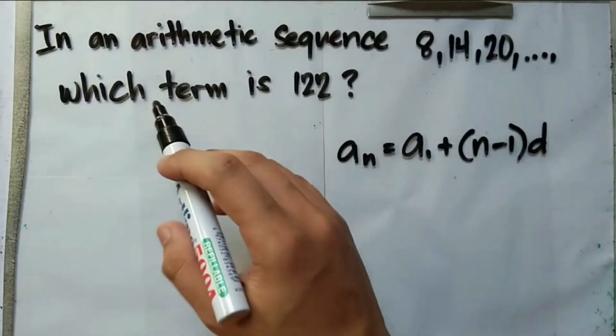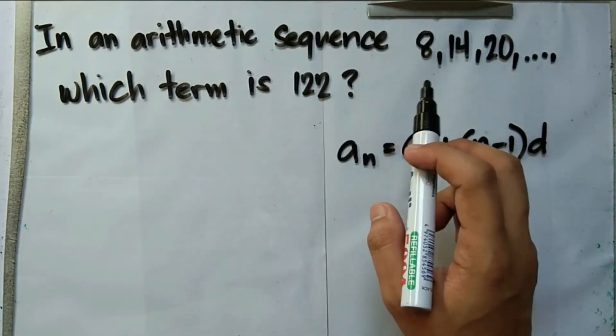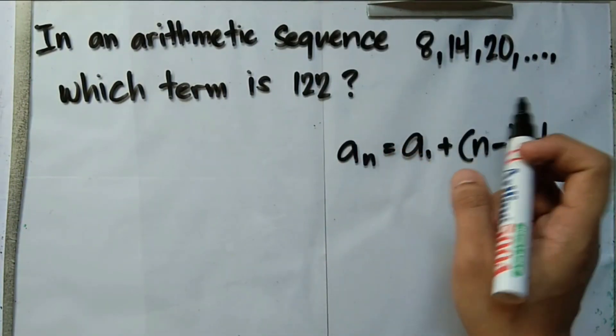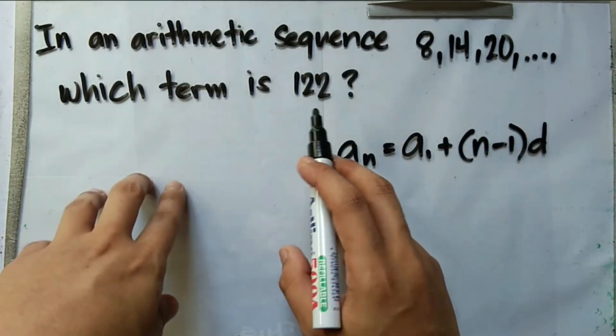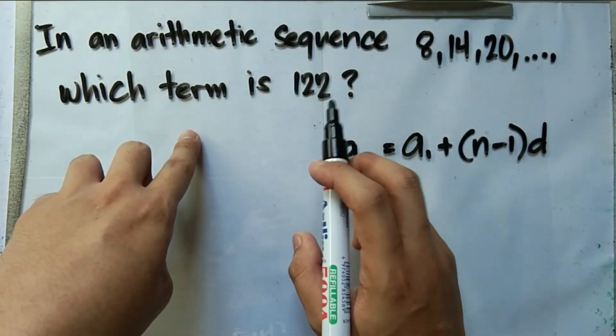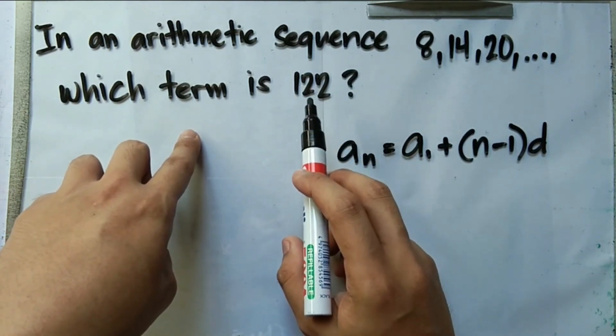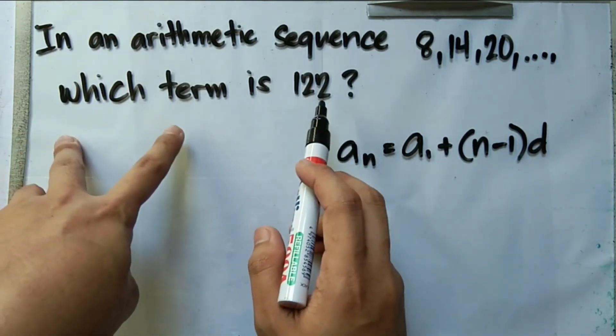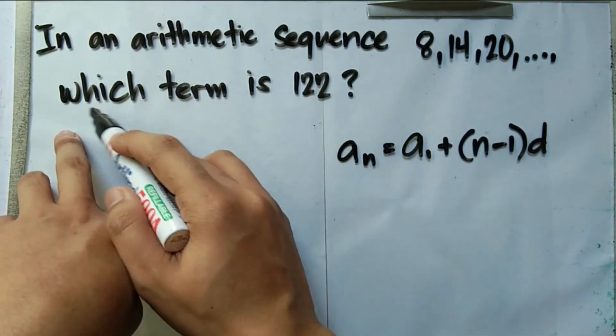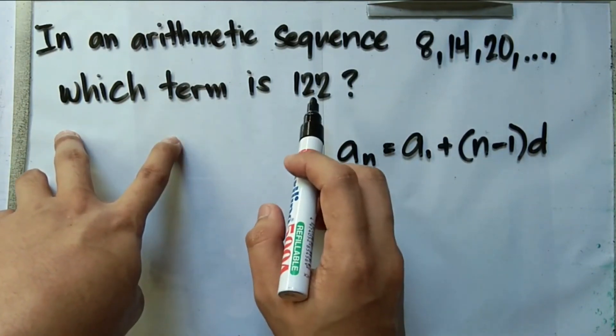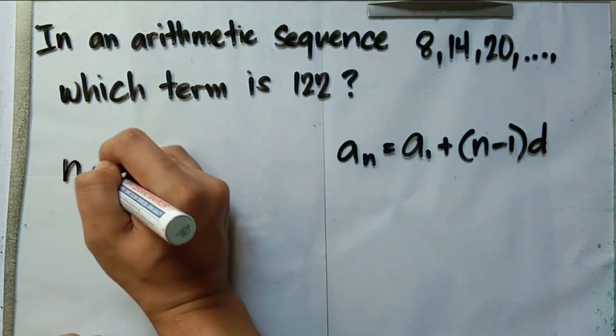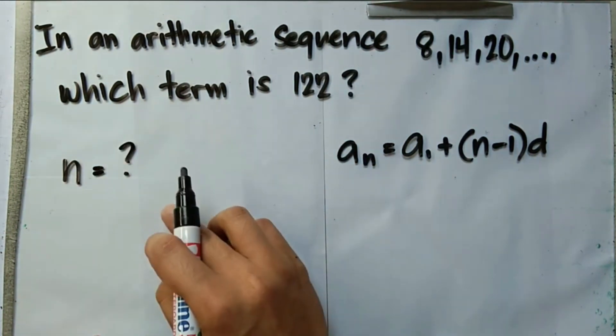Example number 2, in an arithmetic sequence 8, 14, 20, and so on and so forth, which term is 122? Now notice in this example, aₙ is already given. Now we are looking for the position of 122. It asks for which term is 122. In that case, we are solving for n.